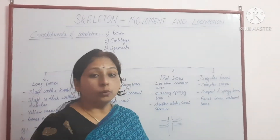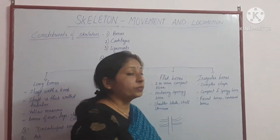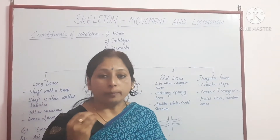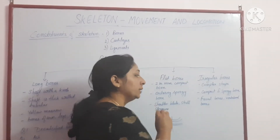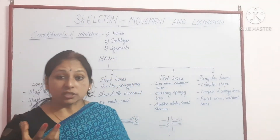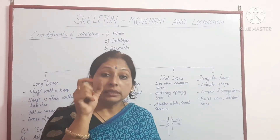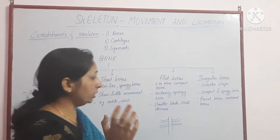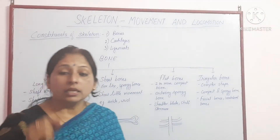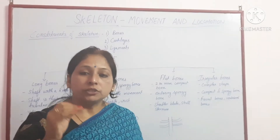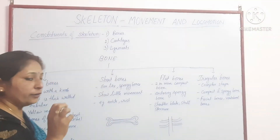Irregular bones are complex in shape. They contain both compact and spongy bone. They are present in the facial bones and the vertebrae.